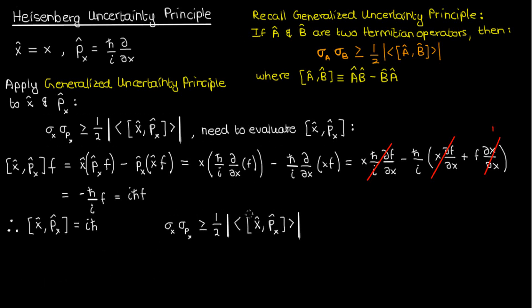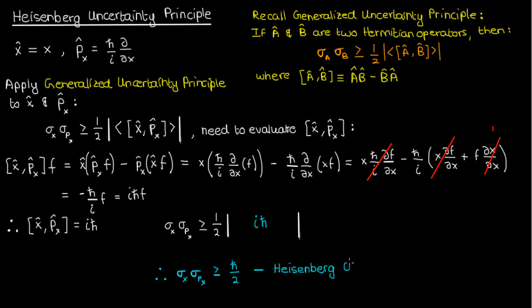Now let's substitute this into the uncertainty principle for x and p. When we do that we'll see that iℏ is just a constant, and the expectation value of a constant is still just that constant, so we can simplify our uncertainty principle accordingly. If we take the magnitude of iℏ — iℏ is just a complex number with an imaginary component — the magnitude will just be equal to ℏ. So finally we'll have σ_x times σ_{p_x} is greater than or equal to ℏ over 2.